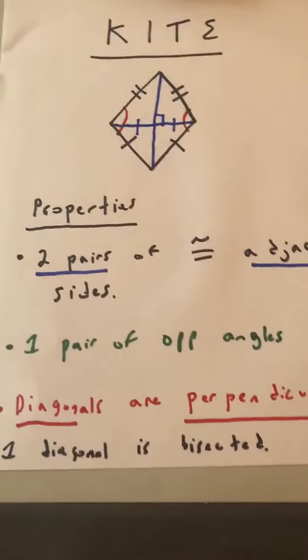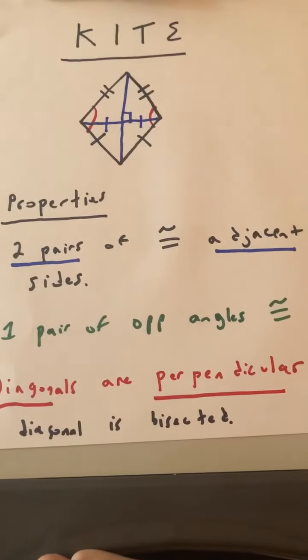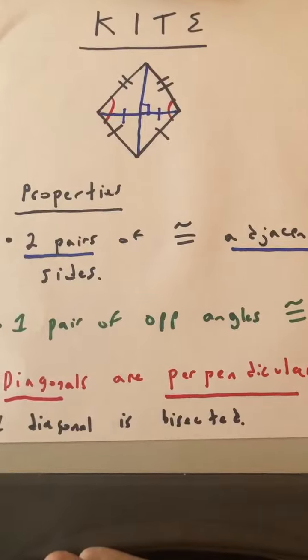Those are the four key properties of a kite, and we'll be using those properties today. See you next time.